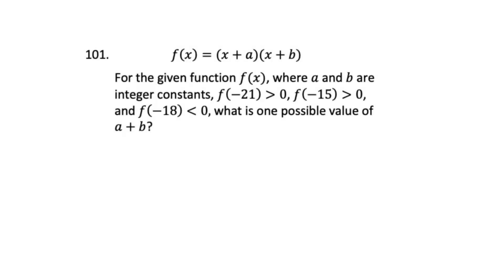Here's our next problem, again, dealing with a quadratic function. It says for the given function f(x), where a and b are integer constants, f(-21) > 0, f(-15) > 0, and f(-18) < 0. What is one possible value of a + b? Now, many of you would probably use the Desmos regression function to solve this. But I think if you do this by hand, you understand fundamentally what it is asking you. It is actually much faster to do it by hand.